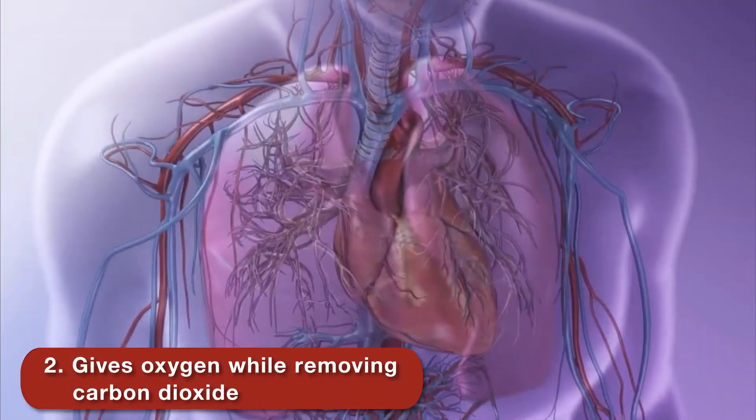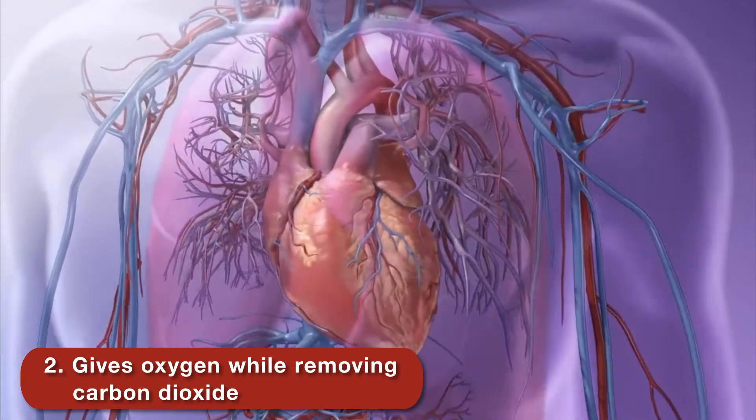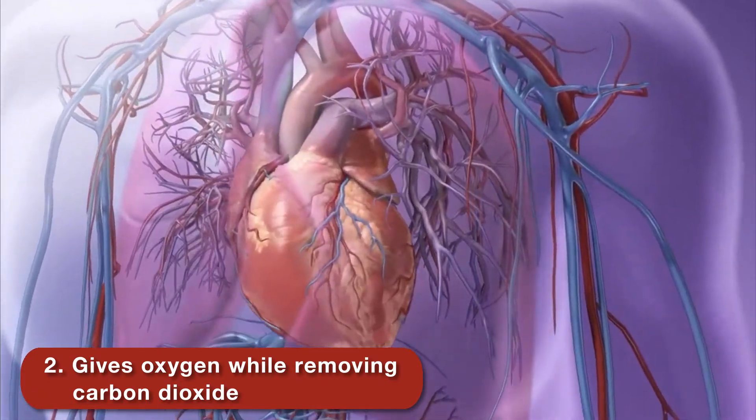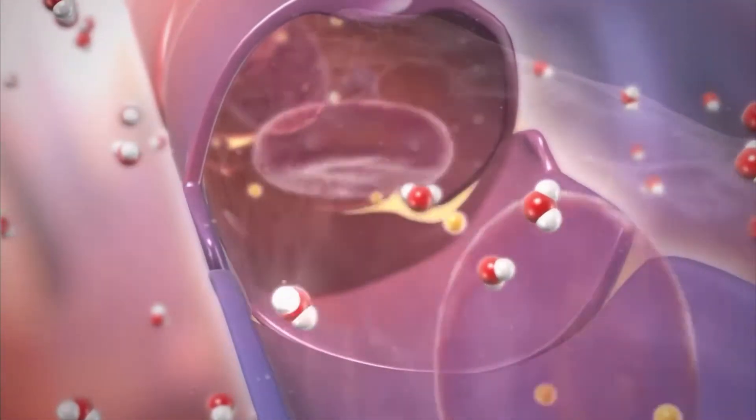Blood absorbs oxygen from the air in the lungs. It transports the oxygen to the cells throughout the body and removes waste carbon dioxide from the cells. In the lungs, the carbon dioxide moves from the blood to the air and is then exhaled.